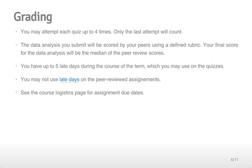A little bit about the quizzes. You may attempt each quiz up to four times. Only the last attempt will count. So if you attempt the quiz three times, the third attempt will be the score that you receive for that quiz. The data analysis you submit will be scored by your peers using a defined rubric we'll talk about in a minute. Your final score for the data analysis will be the median of the peer-review scores. You have up to 5 late days during the course of the term, which you may use on the quizzes. You may not use these late days on the peer review assignments. Late days allow you to turn in an assignment late without any consequence to your grade. See the course logistics page for assignment due dates.